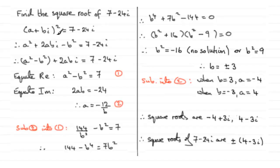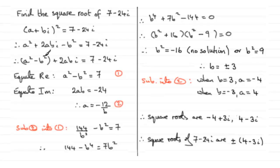Squaring out the bracket: the first term squared is a squared, twice the product is 2abi, and squaring the last term gives b squared i squared, which equals minus b squared since i squared is minus 1. That equals 7 minus 24i. Then I've grouped up the real parts and imaginary parts and equate them.